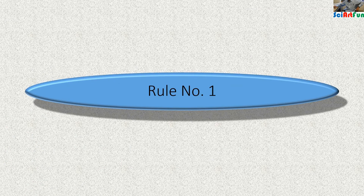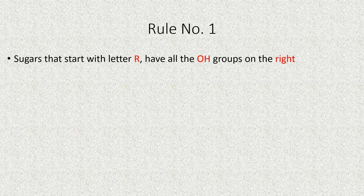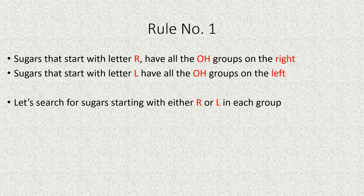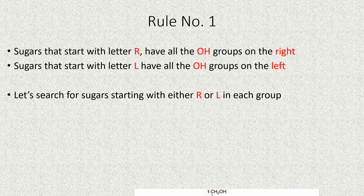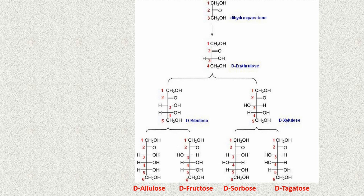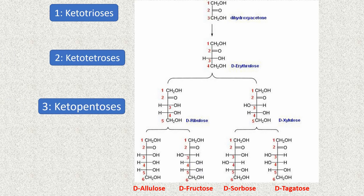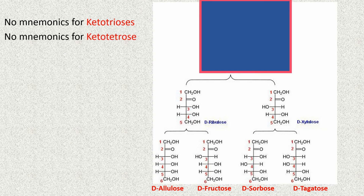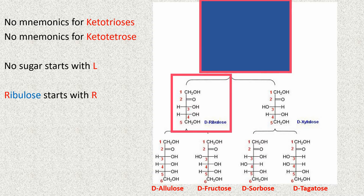Now let's apply rule number one. According to rule number one, sugars that start with the letter R have all the hydroxyl groups on the right side, and sugars starting with L have all hydroxyl groups on the left side. You will first need to memorize the names of the eight ketose sugars: one ketotriose, one ketotetrose, two ketopentoses, and four ketohexoses. We do not need mnemonics for ketotriose or ketotetrose. No ketose starts with L, but ribulose starts with R — therefore the hydroxyl group attached to the fourth type of carbon is on the right side in ribulose.